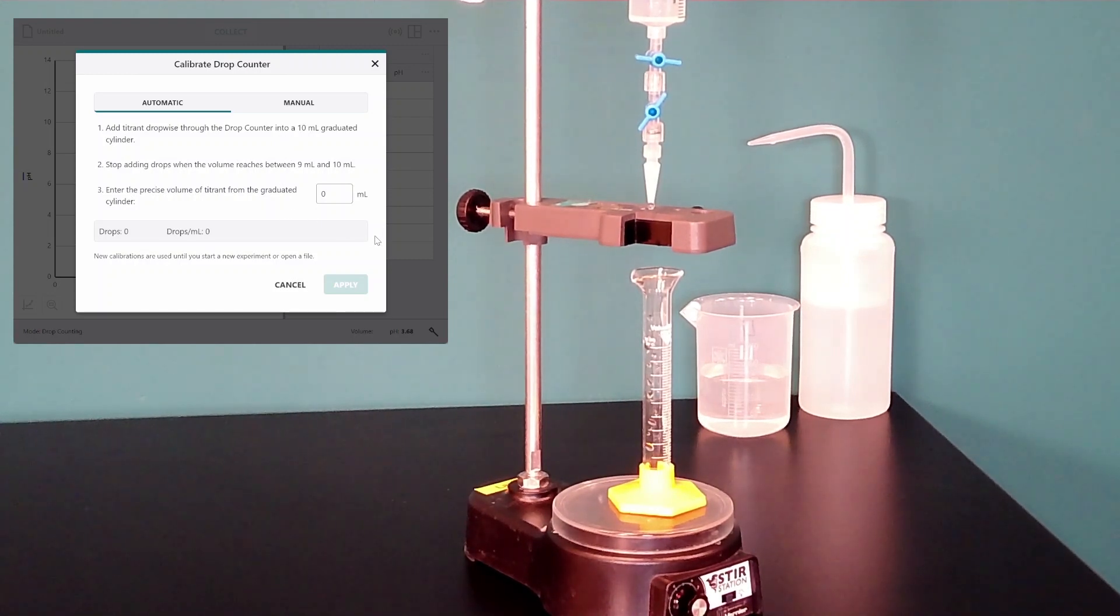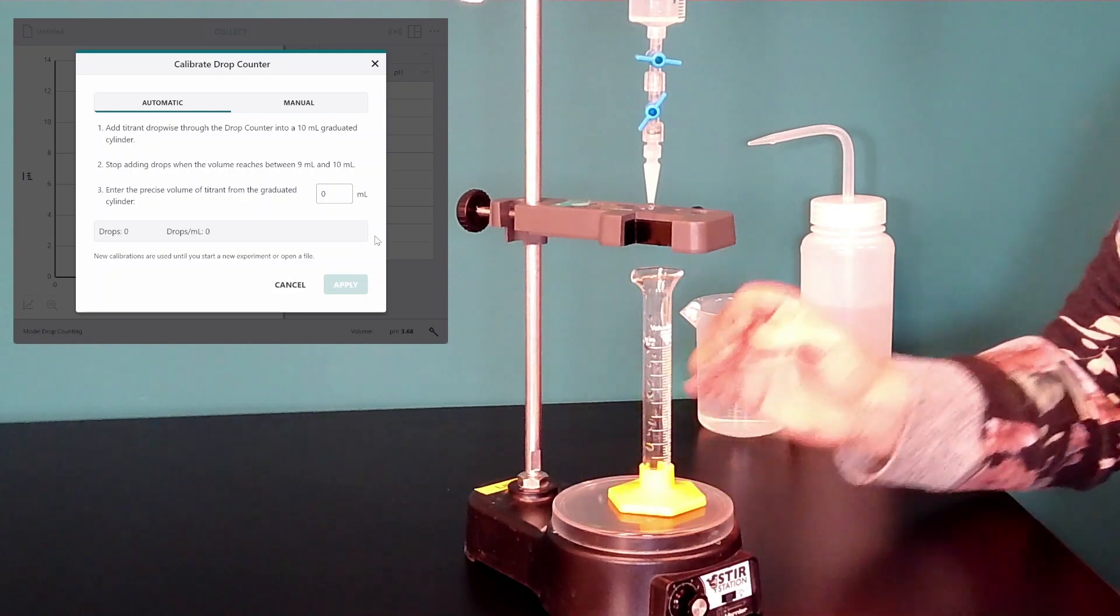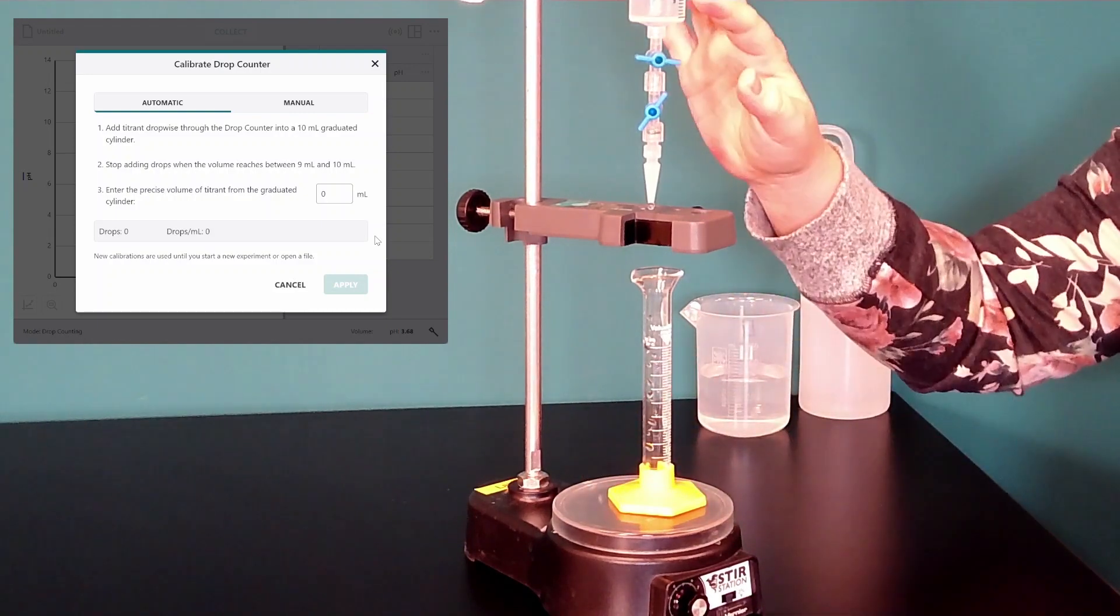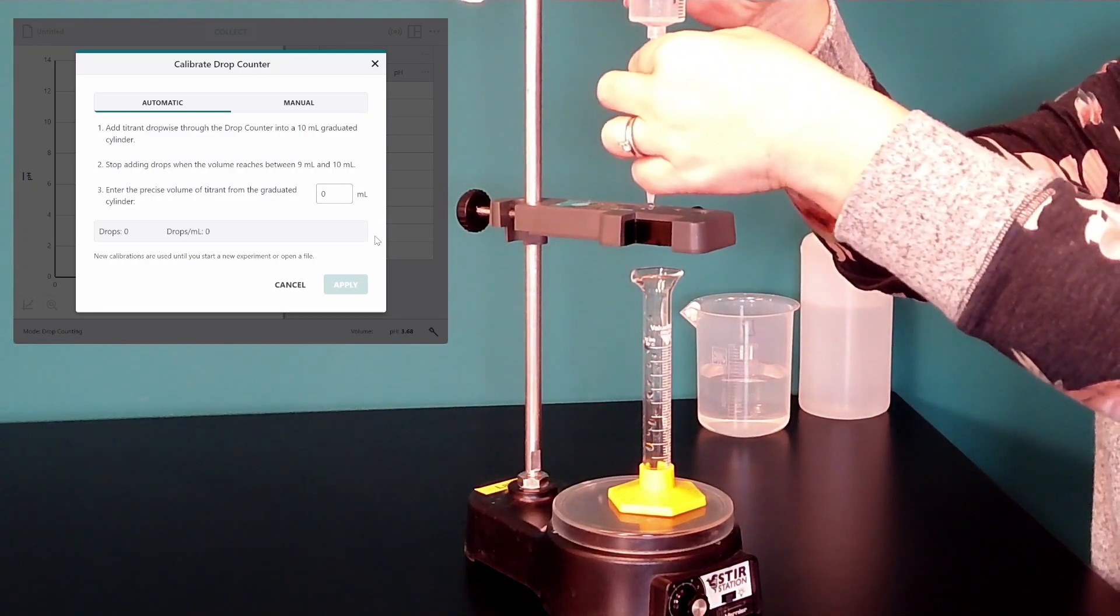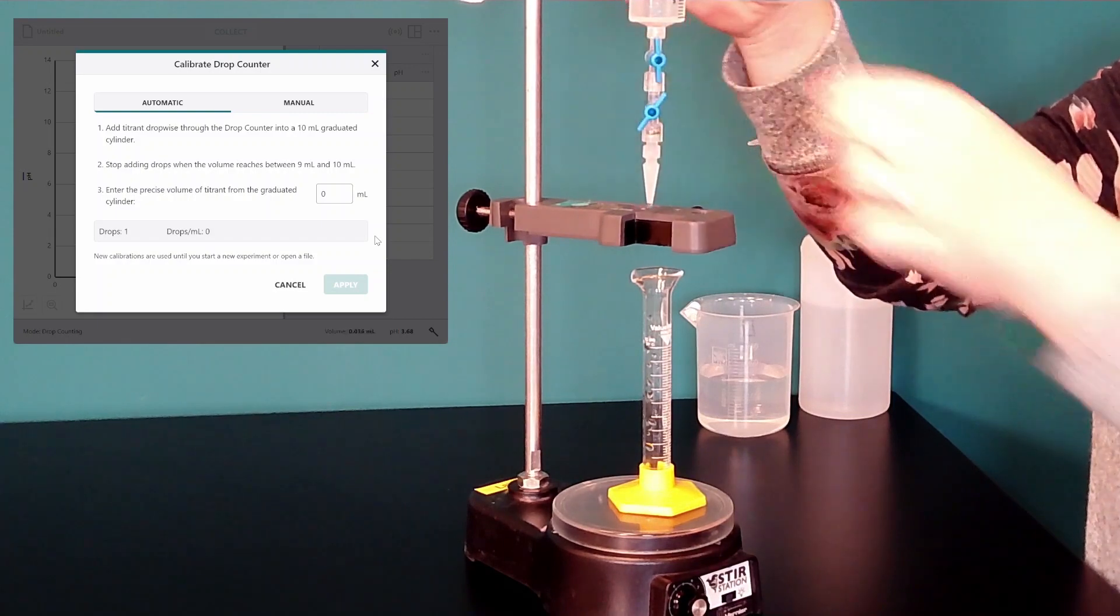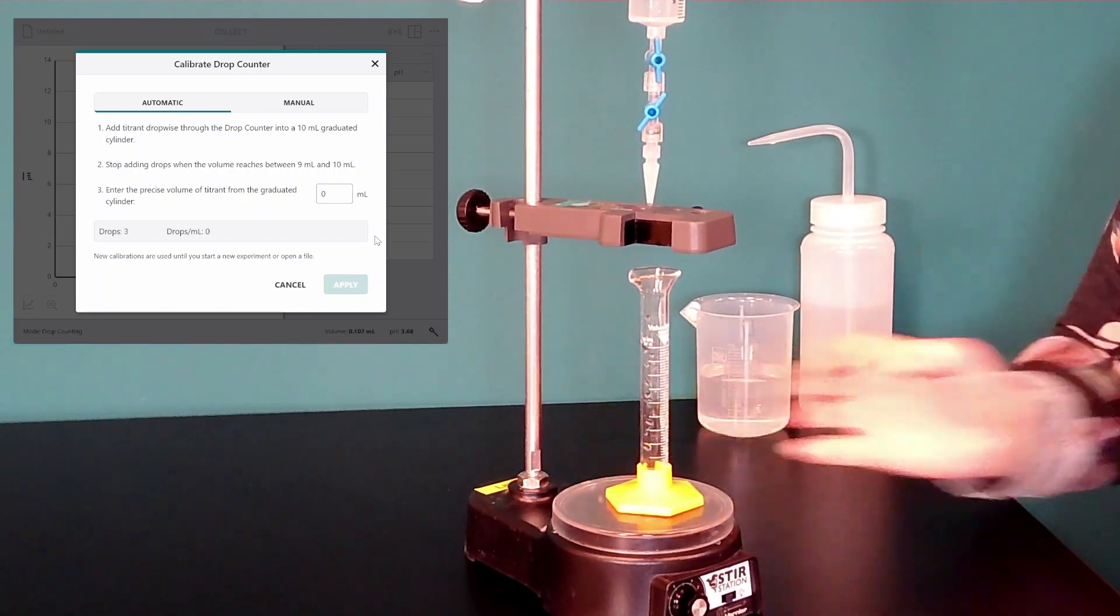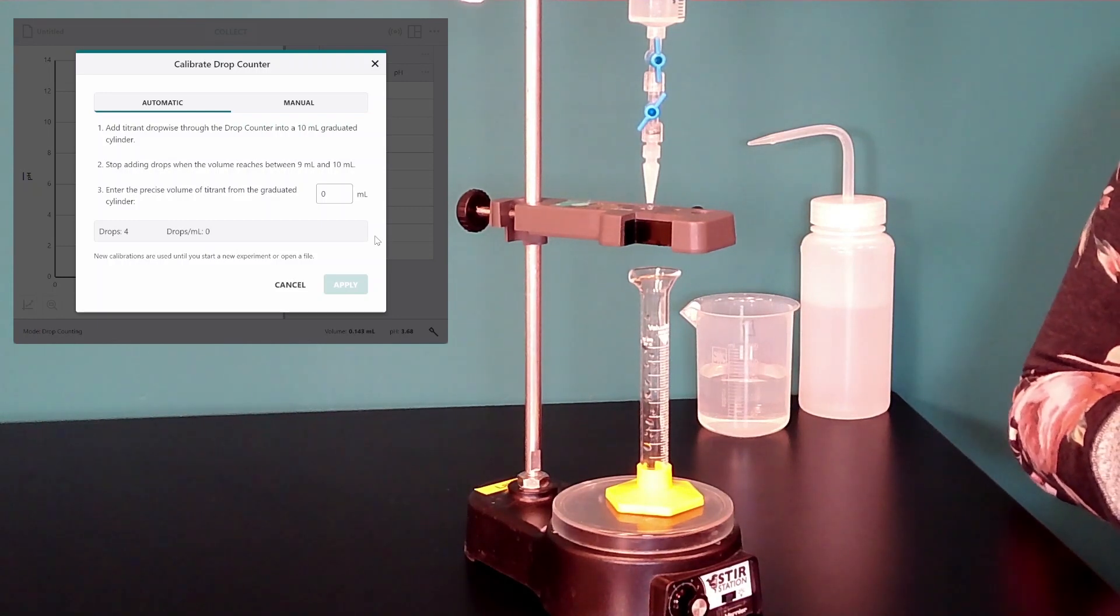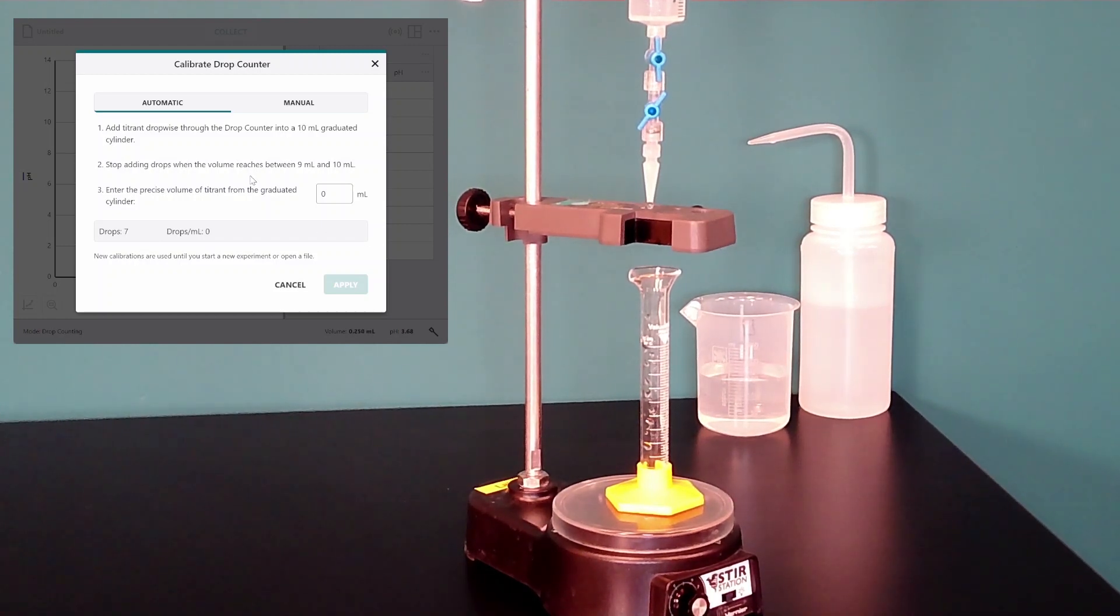I need my 10 milliliter graduated cylinder lined up to accept drops from my reservoir and I want to make sure that when I deliver water from the reservoir into the graduated cylinder that they're going in at about one drop per second. This will give you the best results for a titration and so we should be emulating that in our calibration.